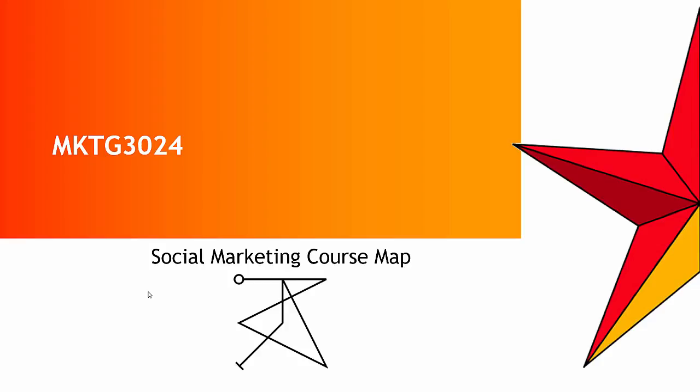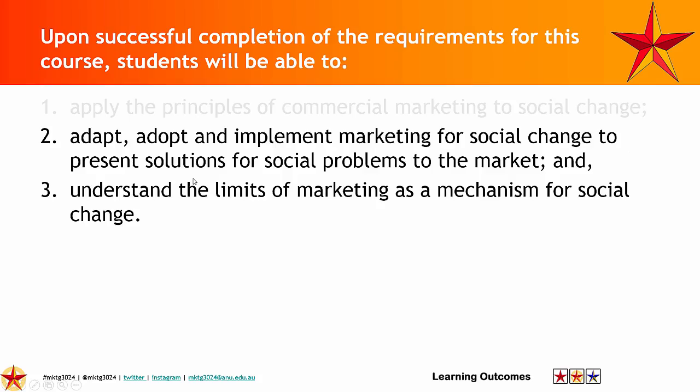Welcome to the social marketing course map part two, in which we look at the second series of learning outcomes and the second assessment task. The second learning outcome is about understanding the changes that you need to make to marketing tools, techniques and technologies in order for them to be most effective in social marketing.